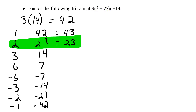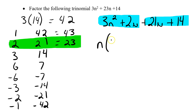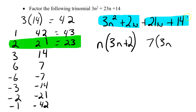We rewrite by expanding the middle term: 3n squared plus 2n plus 21n plus 14. Now we split into two pairs. In the first pair, the common factor is n, giving us n times (3n plus 2). In the second pair, 21 and 14 share a common factor of 7, giving us 7 times (3n plus 2). Quick check: both brackets are (3n plus 2) — they match, so we're on the right track.